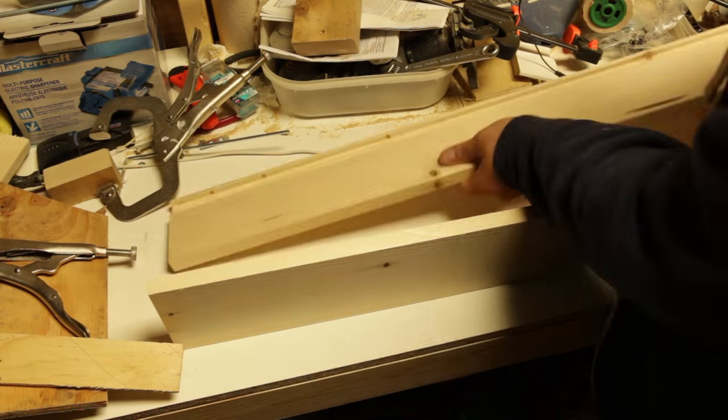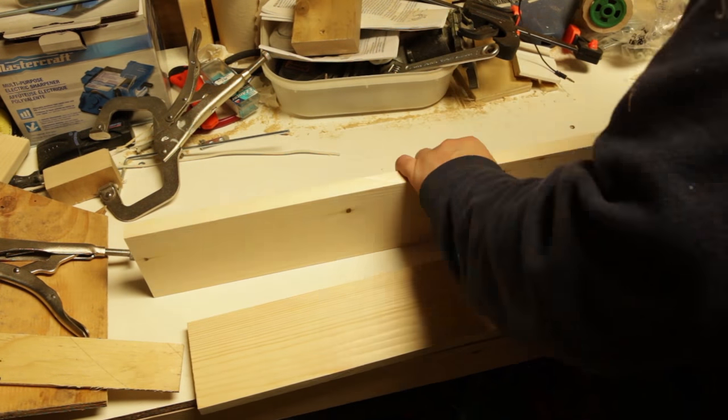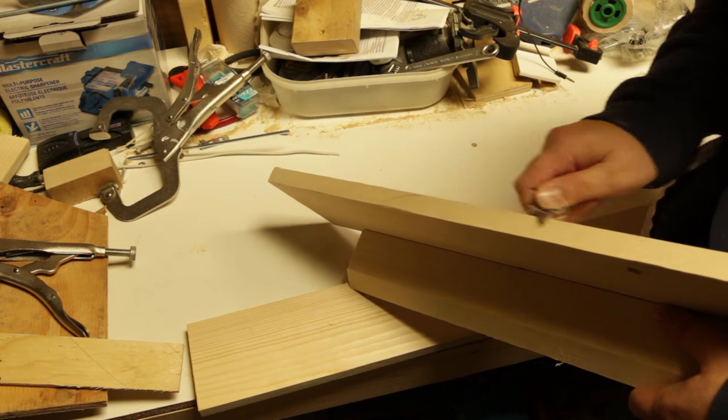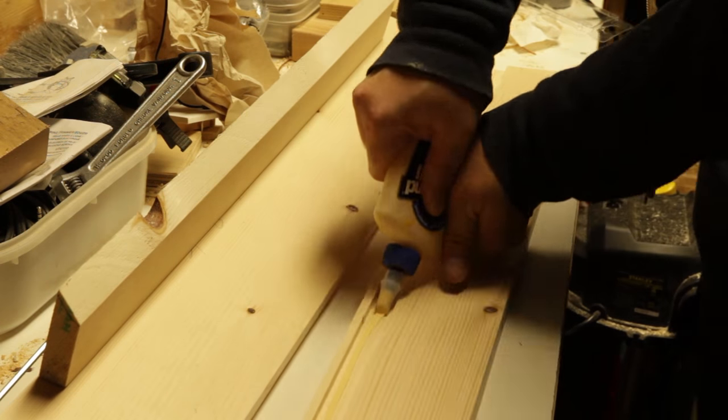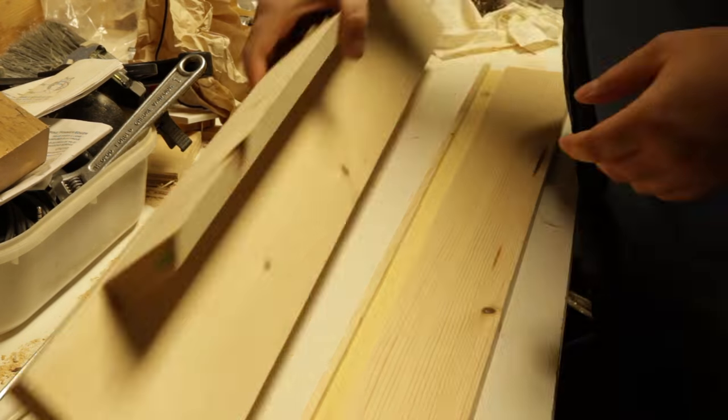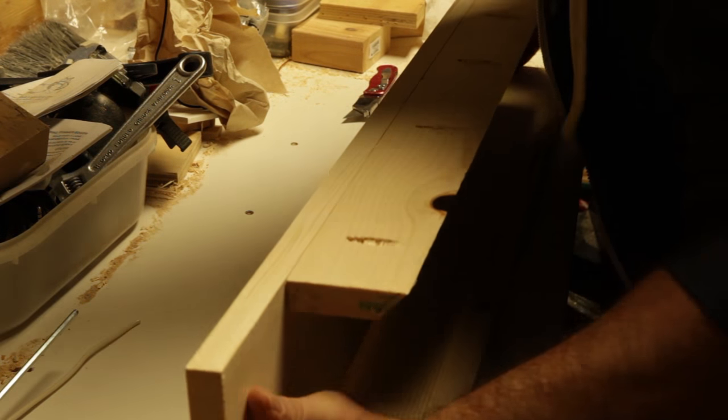The top part of the shelf didn't want to fit into the rabbet that I had cut so I had to use a razor knife to just widen that up just the tiniest bit. It was still a pretty snug fit but just getting in there tight with some glue means it's not going to move anywhere and it's going to be nice and solid.